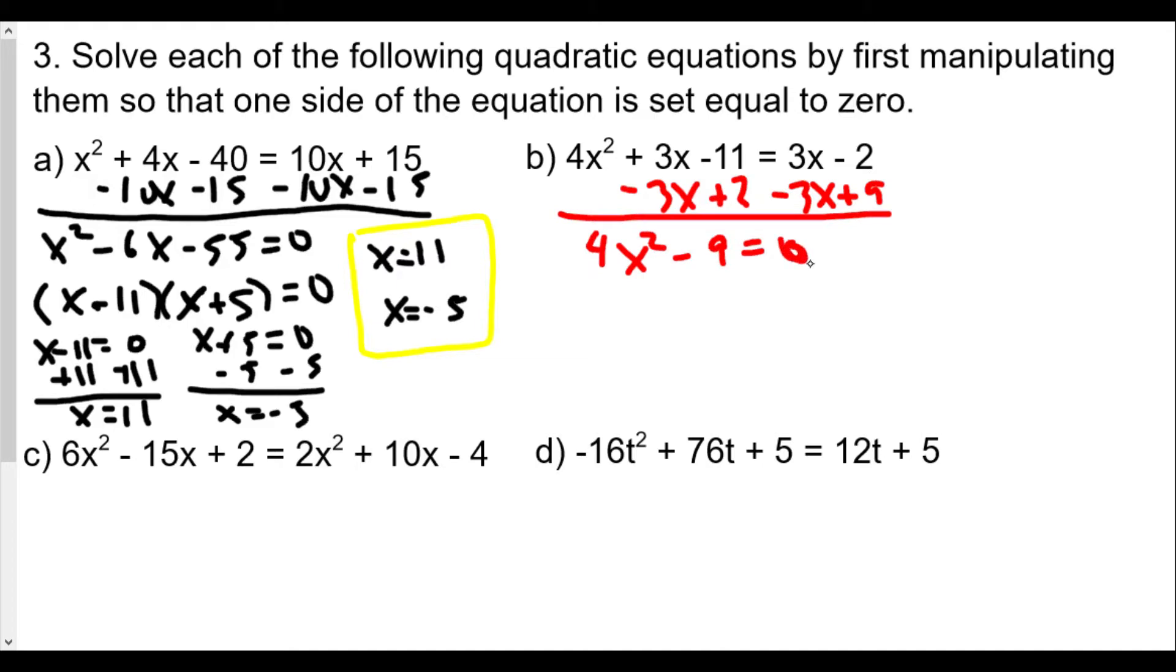What we have here is referred to as a conjugate pair situation, or the difference of perfect squares, meaning that we have a perfect square minus perfect square. When we factor this one, we take the square root of each term. The square root of 4x² is 2x, and the square root of 9 is 3. We have a plus and a minus.